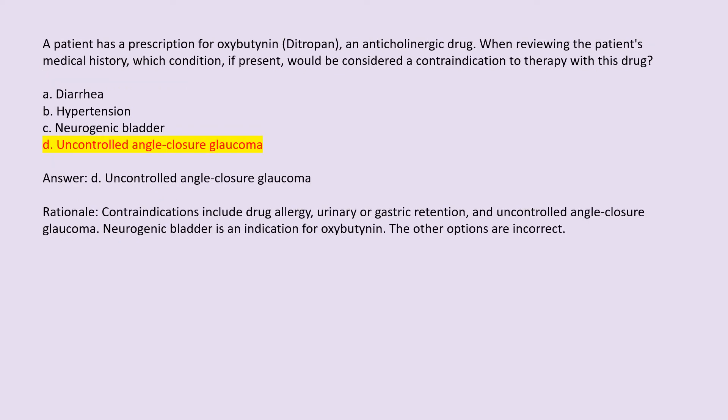Answer: D. Uncontrolled angle-closure glaucoma. Rationale: Contraindications include drug allergy, urinary or gastric retention, and uncontrolled angle-closure glaucoma. Neurogenic bladder is an indication for oxybutynin. The other options are incorrect.